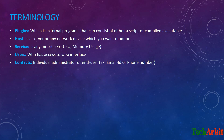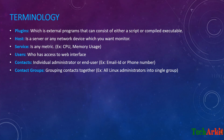Contacts are individual administrators or end users who have an email address or phone number to be notified if any problem is identified by the monitoring system. Contact groups are groupings of contacts together — for example, if you have multiple contacts in your team, you can combine them together as a contact group.